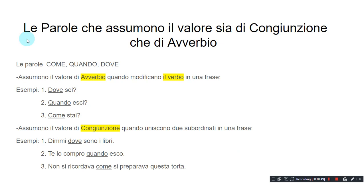So, these were the conjunctions. Other than the conjunctions we studied today, there are some words that sometimes have the value of a conjunction, and other times they may be adverbs. Le parole che assumono il valore sia di congiunzione che di avverbio are: come ('how'), quando ('when'), dove ('where'). They can sometimes be a conjunction and sometimes be an adverb. Let's see in which cases they become an adverb and in which cases they are conjunctions.